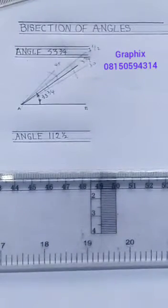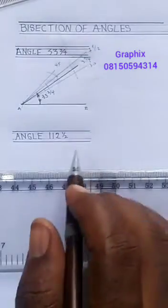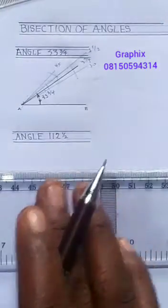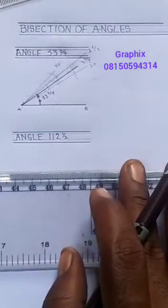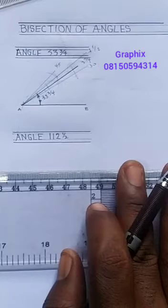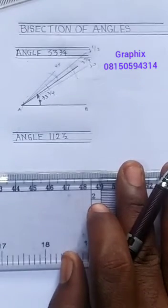We want to construct angle 112 and a half. So you ask yourself, angle 112 falls in between 135 and 90.